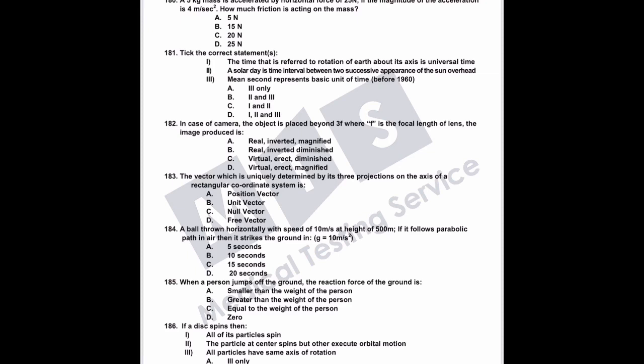Question 182: in case of a camera, the object is placed beyond 3F where F is the focal length of the lens. When the object is beyond 3F the image forms between F and 2F, so the image is real, inverted, and diminished.